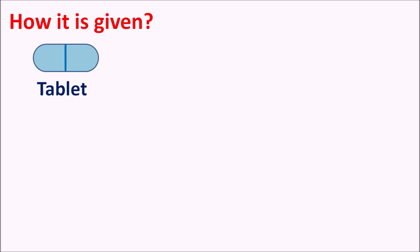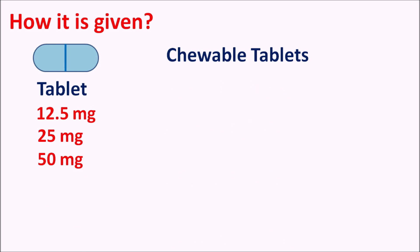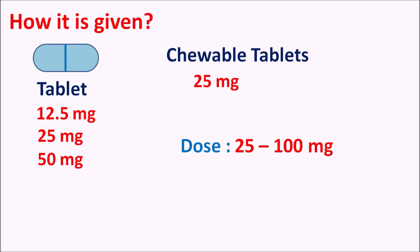This drug is available as tablets in three strengths: 12.5 mg, 25 mg, and 50 mg. It is also available as chewable tablets at a strength of 25 mg. The dose is variable from 25 to 100 mg per day, given as divided doses, depending on control of nausea, vomiting, and other symptoms associated with motion sickness.